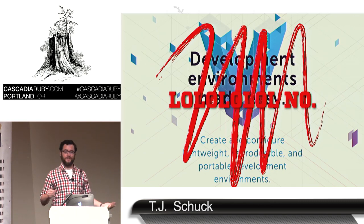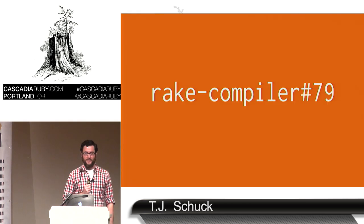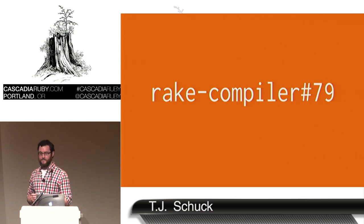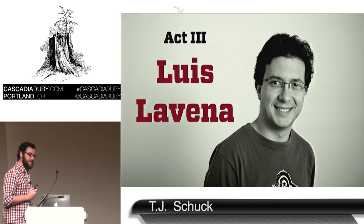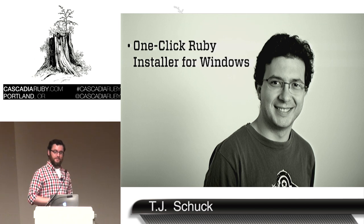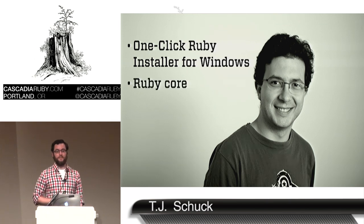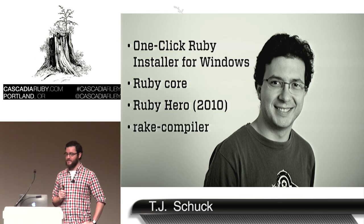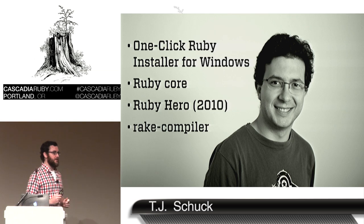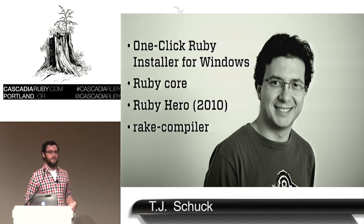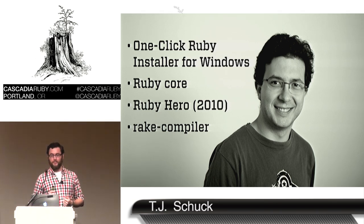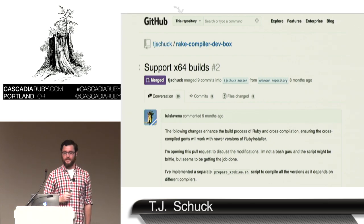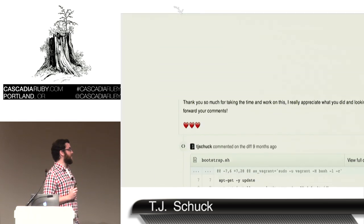So what do you do with anything that doesn't work? You put it on GitHub. With that, I opened rake-compiler-dev-box issue number 79. In our three-act play, this would be the climax — this is our turning point. You were promised a love story. This is Luis Lavena. Luis is the developer of the one-click Ruby installer for Windows. As part of that work, he became a member of the Ruby core team, and he was voted a Ruby hero in 2010. But important for this talk, he is the developer of rake-compiler. So when I opened that issue, he opened rake-compiler-dev-box pull request number 2, which was his attempt to help me through this trying time. On this epic thread, he dropped triple hearts on me — not once, not twice, not three times, but four times.